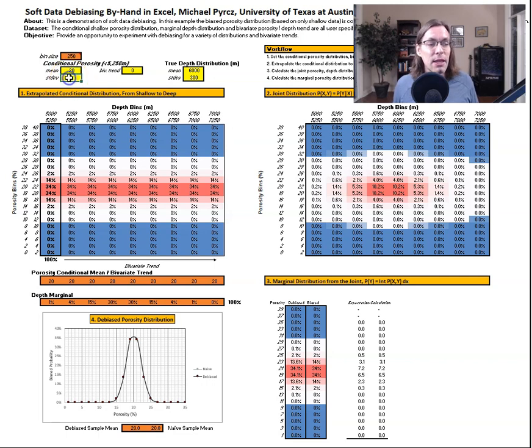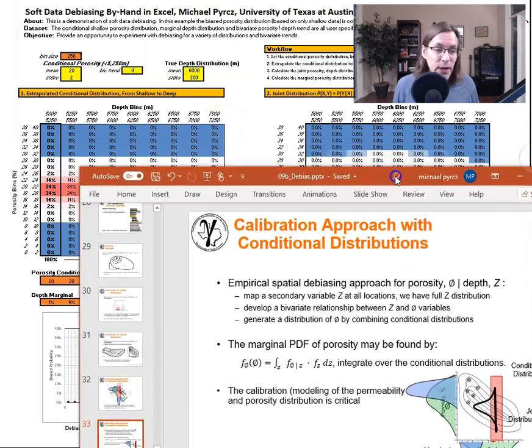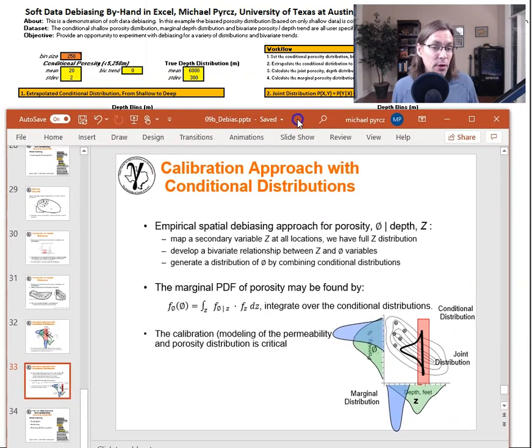Now what I've done for fun is I've given you the ability to control through a Gaussian distribution, the mean and standard deviation. So the entire conditional distribution, you can then set the coefficient for this bivariate trend, which is that extrapolation of the conditionals to the other depth ranges. And then what I've done is I've said, you can also change the distribution of depths over the entire reservoir. And so what I did is I set it as 6,000 meters is the mean it's Gaussian again, and 300 standard deviation plus or minus three standard deviations. We're talking about a range of about 5,000 to about 7,000. So we got a Gaussian distribution of possible depths like that.